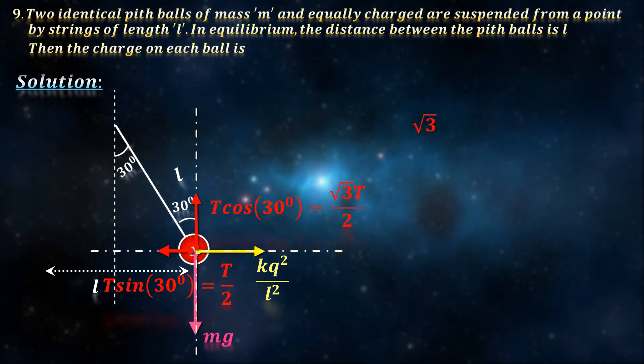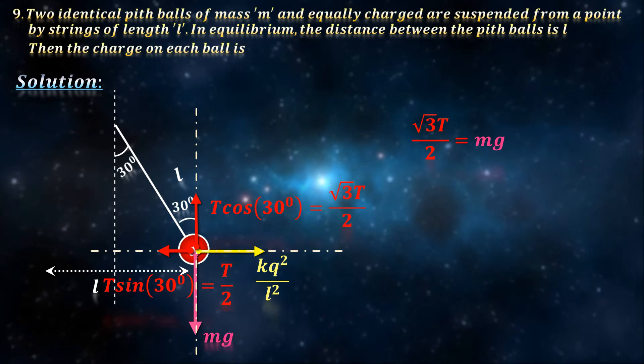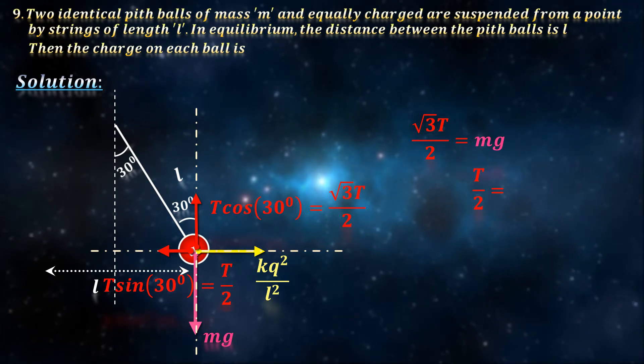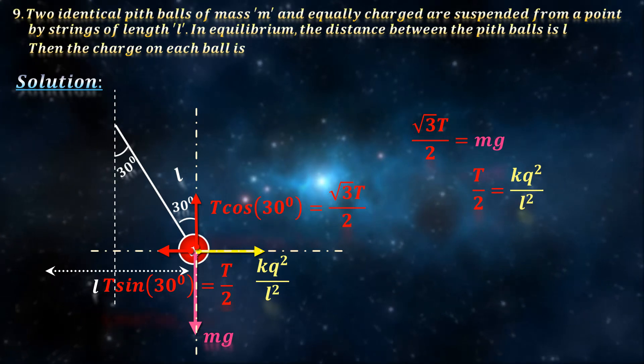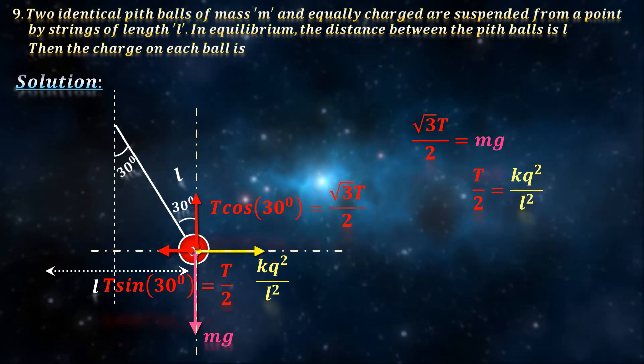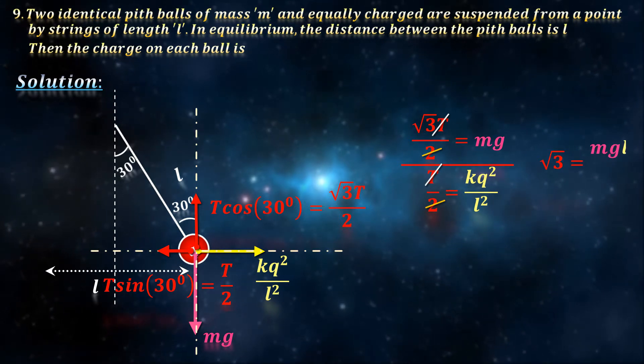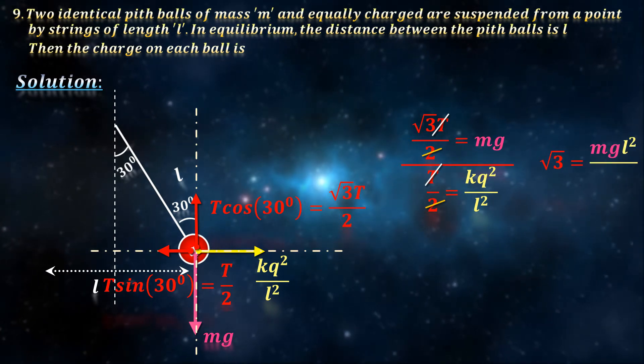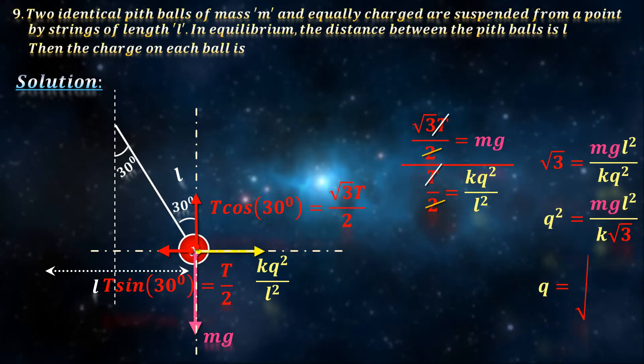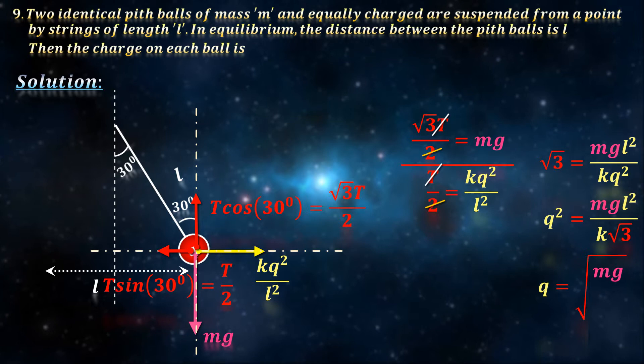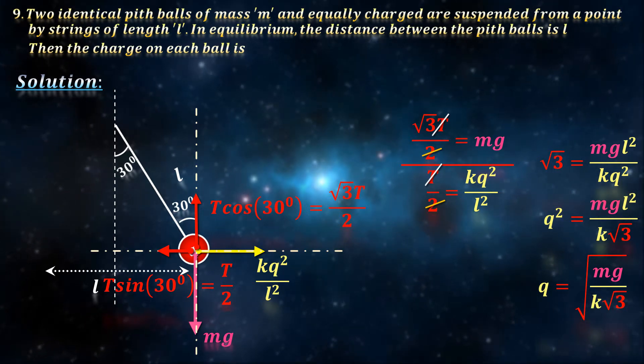Thus, root 3 T by 2 must be equal to Mg, and T by 2 equals the Coulomb's force. We don't want tension, so let's get rid of it. By dividing the two equations, we get root 3 equals MgL squared divided by kq squared, making q equals square root of Mg divided by k root 3 times L.